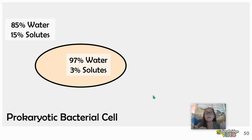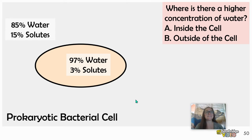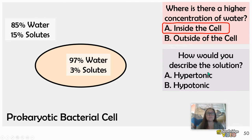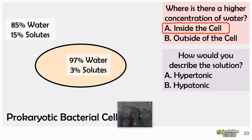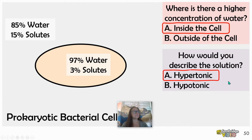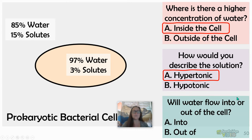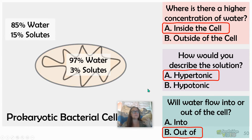So think about where there's a higher concentration of water. Inside the cell, 97% is higher than 85% outside. How would you describe that solution? It's going to be a hypertonic solution — high in solutes, low in water. Water flows from a high concentration to a low concentration, so water will be flowing out of the cell by osmosis — a net movement out. The water flows out and the bacterial cell will actually shrivel.